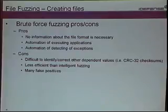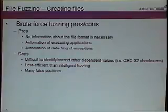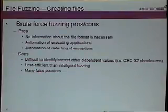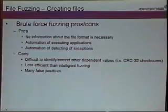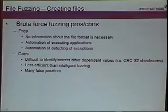One downside to pure brute force that we ran into immediately was file formats with dependent values. A good example is PNG, which has checksums throughout. The reason for that is to identify malformed files — not necessarily malicious, but maybe something got messed up in transmission. When file formats have a dependent value, we need to account for it. We can't just change something without changing the dependent values, because if we don't, we'll never reach the location where a vulnerability can occur — the application will just kick it out early.